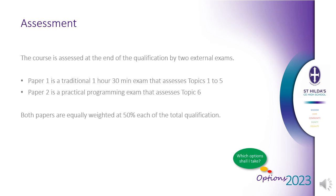The course is assessed at the end of Year 11 by two external exams. Paper one is a traditional written exam that lasts an hour and a half and assesses topics one to five. Paper two is quite an exciting paper — it's a practical programming exam, an on-screen assessment that is two hours in duration and assesses students' programming understanding. Both papers are equally weighted at 50% of the qualification each.